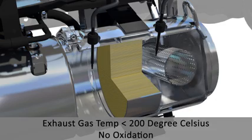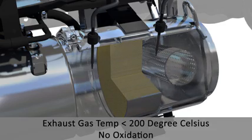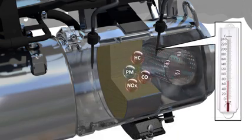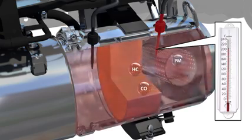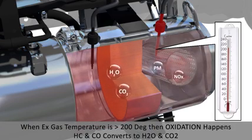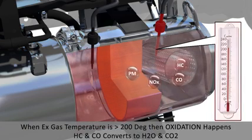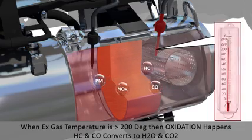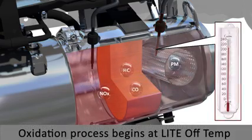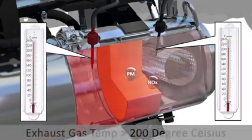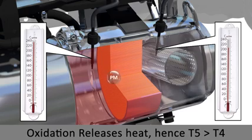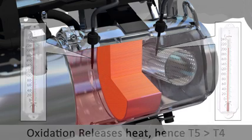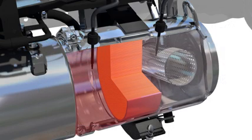But there is one problem. For the oxidation process to happen, there should be sufficient heat. As you can see, the oxidation happens only when the temperature of exhaust gases is above 200 degrees Celsius, and this is called the light-off temperature. Whenever oxidation happens at the DOC, the temperature at downstream T5 is higher than the temperature at upstream T4. The increase in temperature indicates correct functioning of the DOC.